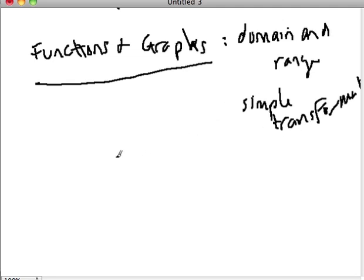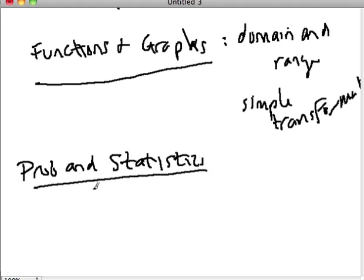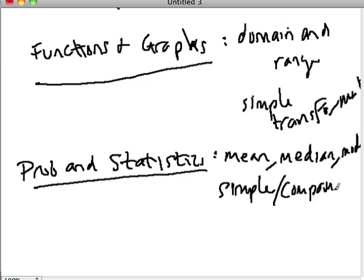We're also going to be looking at probability and statistics. Some fair things to look for in this category are mean, median, mode, bar graphs, line graphs, circle graphs, scatter plots, histograms, pie charts, and all kinds of stuff. Also, simple and compound events - events that happen right after each other in succession.